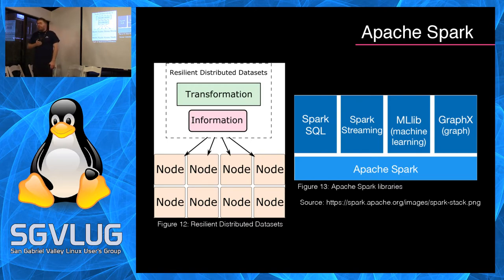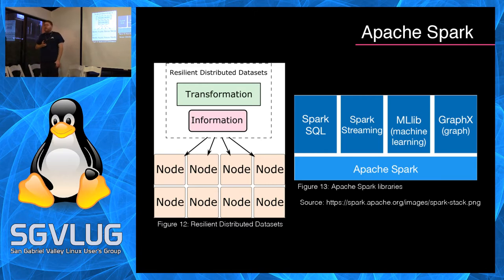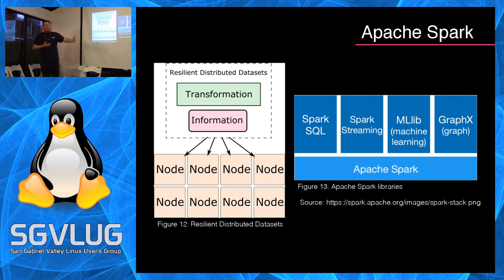Regarding MLlib: it's likely similar to Mahout, which is another machine learning library written for Hadoop. MLlib would be the in-memory equivalent for Spark. It includes things like neural networks, though I'm not deep enough into machine learning to tell you exactly what's in there.